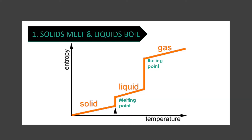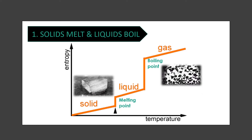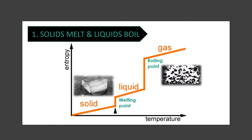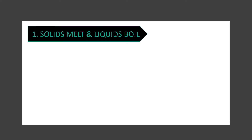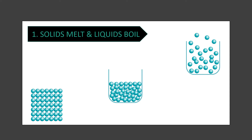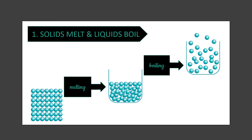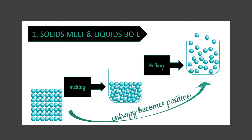Firstly, entropy increases when solids melt or when liquids boil. This graph — which you have seen in the previous lesson — clearly shows how entropy is affected by change in temperature and hence physical state. At a molecular level, the energy of the particles increases, and at melting or boiling temperature, the particles break away from each other and move further apart. This increases disorder and therefore entropy as well, or you can say that the change in entropy is positive.